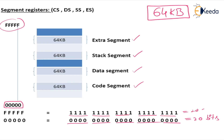The data is available across the total memory. If you want data at a particular location, you first calculate the physical address, then you can get the data and transfer it through the data bus to the queue. Looking at the segment diagram: each segment size is 64 kilobytes.